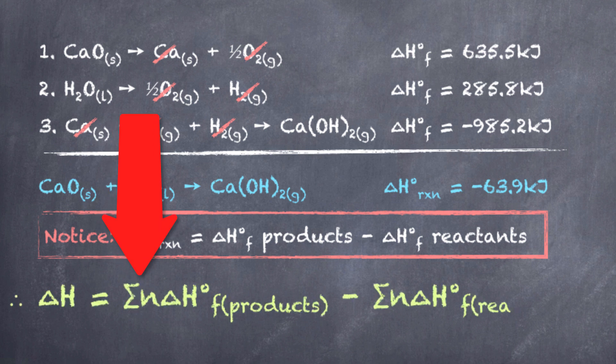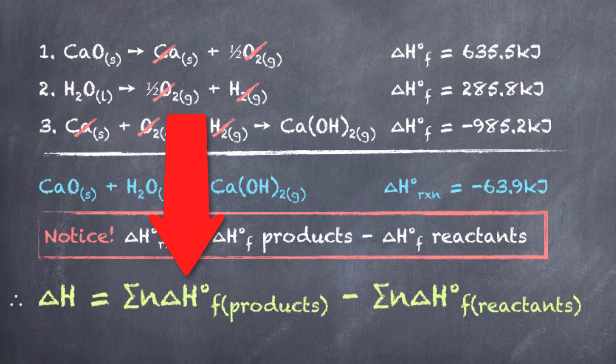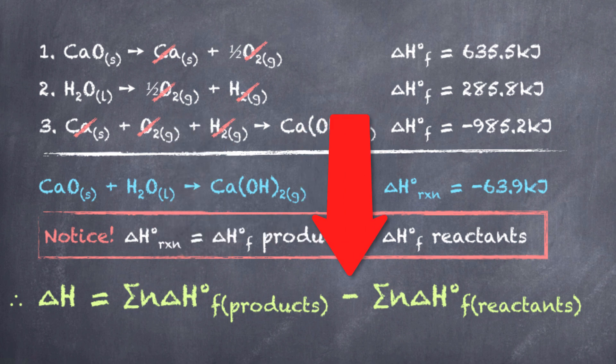And that is the sum of the number of moles of the enthalpy change of the products, subtracting the sum of the number of moles times the enthalpy change of the reactants is going to give us the overall enthalpy change for that particular reaction.